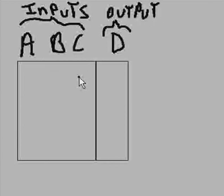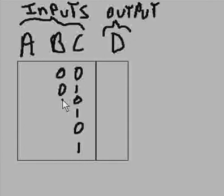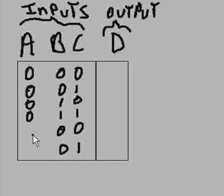So let's assign them values. A: 0, 1, 0, 1, 0, 1. B: 0, 0, 1, 1, 0, 0. And C: 0, 0, 0, 0, 0, 1, 1.